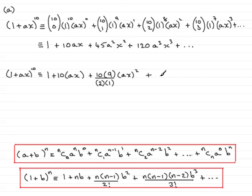Moving on now to the fourth term. We have N times N minus 1 times N minus 2. So that's going to be the power. 10 times N minus 1. So that's 9 times N minus 2. So that's going to be 8. All over 3 factorial, which is 3 times 2 times 1, multiplied by the B term cubed. B, remember, is AX. That's AX all cubed. Plus and so on.